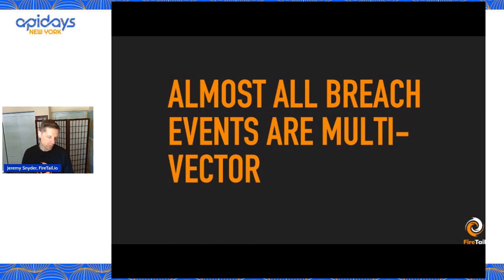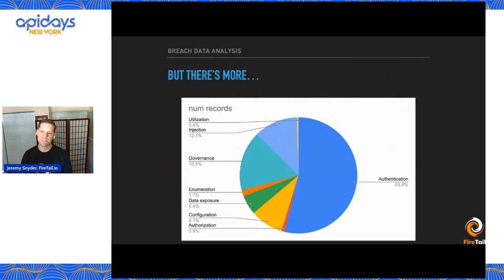There might be more, but basically all breach events are multi-vector. In our methodology, when we look at API breaches, we start with what's the first thing we identified that went wrong, what's the second thing that went wrong. Sometimes that information is available, sometimes it's not.